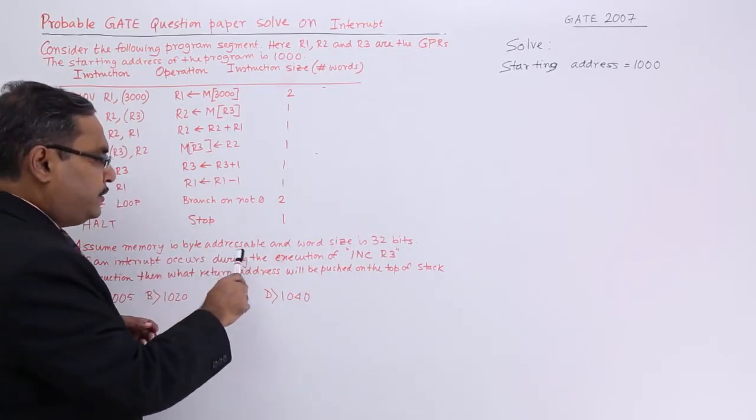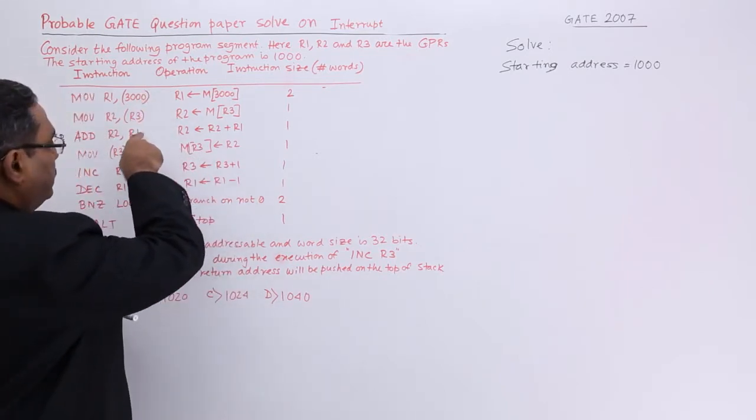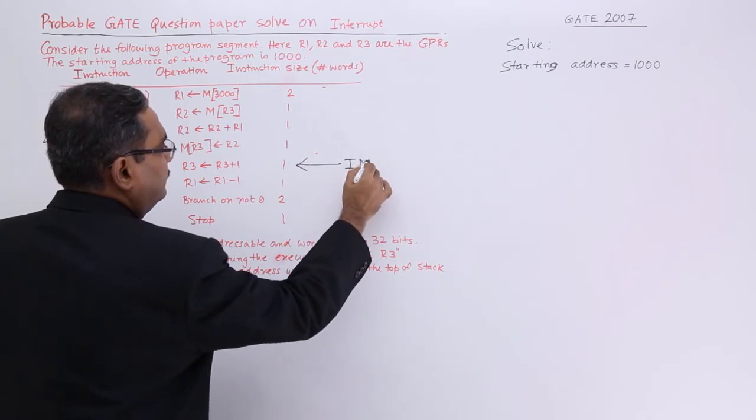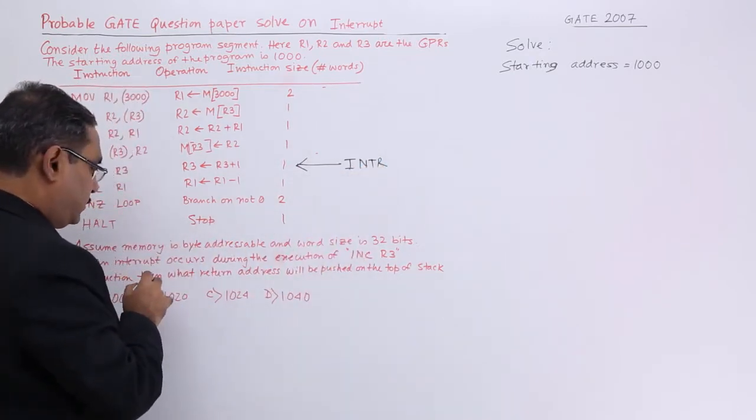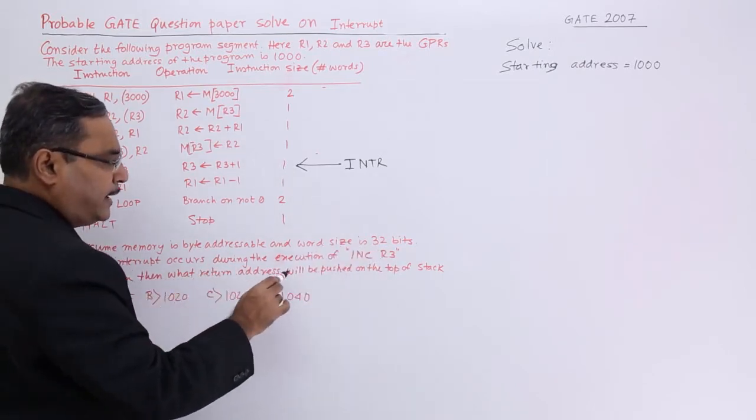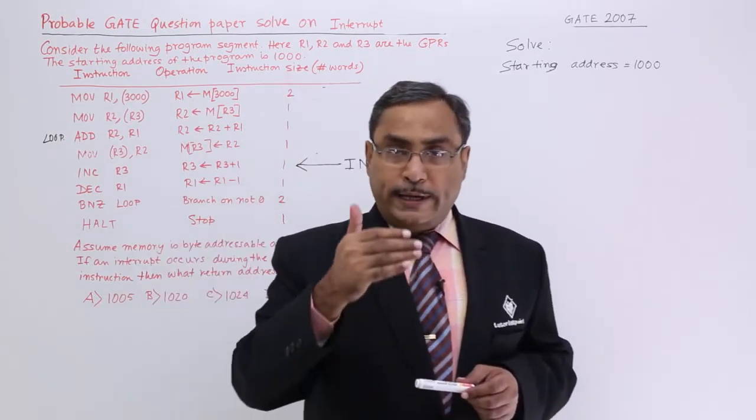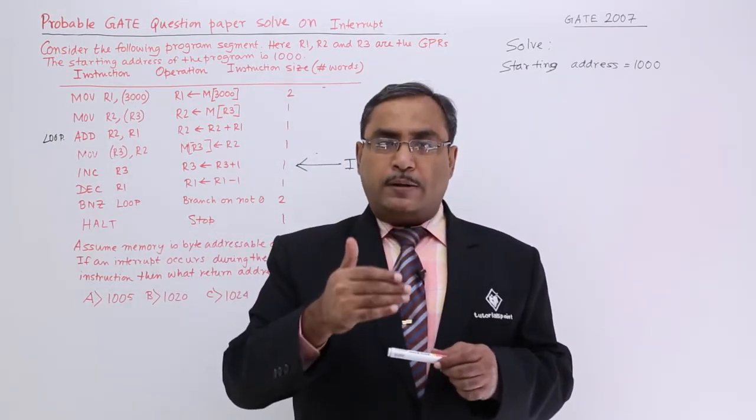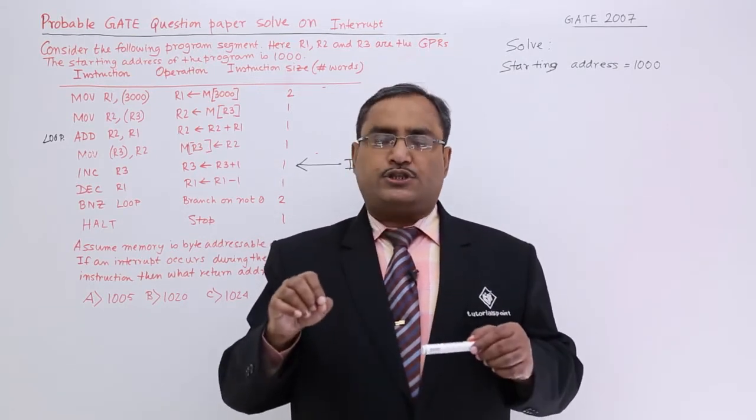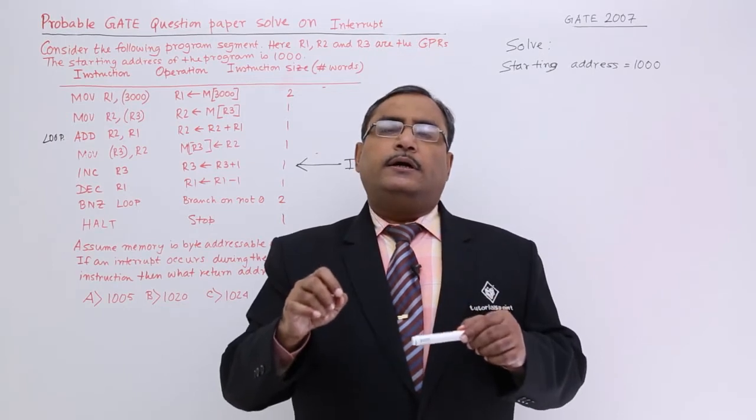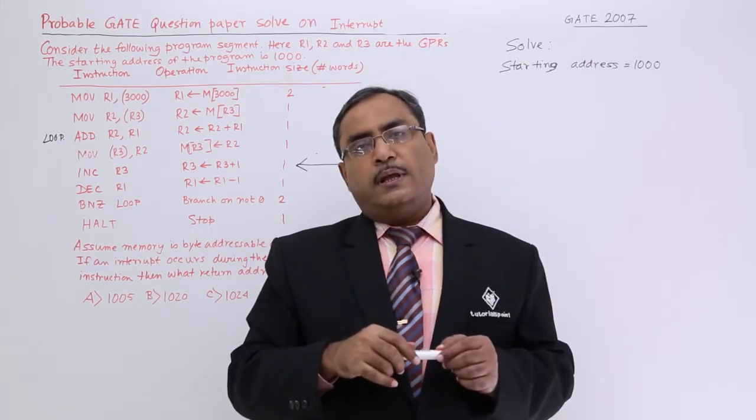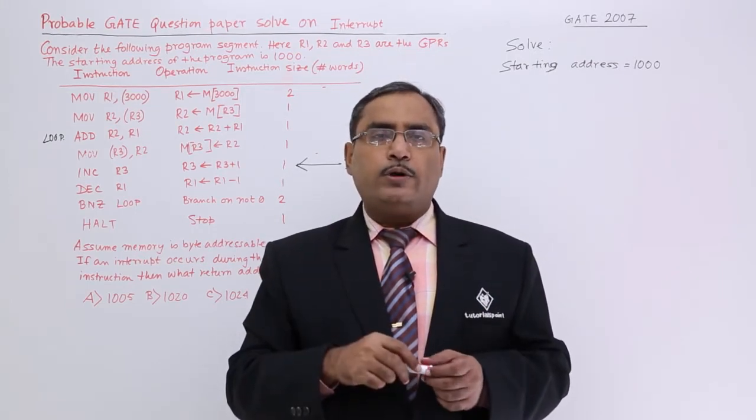If an interrupt occurs during the execution of INCR3, let me find out this is the INCR3, here the interrupt has occurred. Instruction execution of instruction INCR3, then what return address will be pushed on the top of the stack. When interrupt will occur, then the current program will get postponed after execution at the end of the current instruction, then the return address of the program will be pushed on the top of the stack and then the respective interrupt handling routine will get executed.